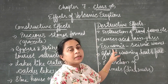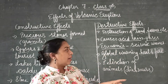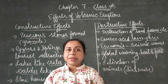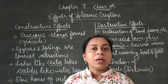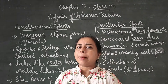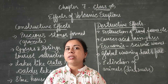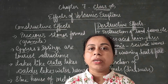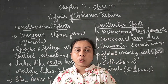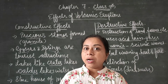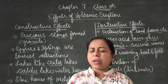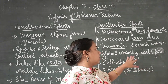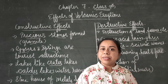The next destructive effect is tsunami. Some seismic waves happen after volcanic eruption in seas and oceans, which can cause a tsunami. For example, in 2004, a big tsunami affected Indonesia and the southern part of India, including Kerala and Tamil Nadu. A lot of lives were lost. This tsunami can also be triggered by volcanic eruption.